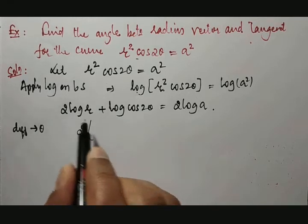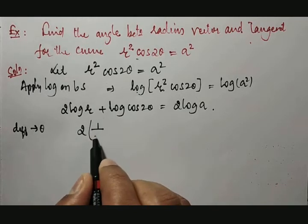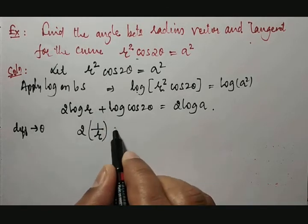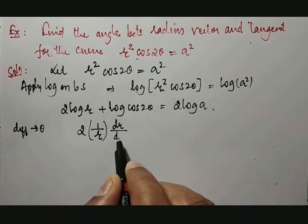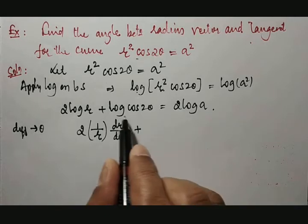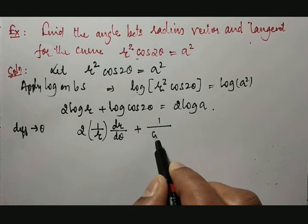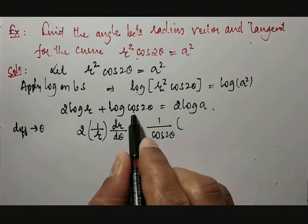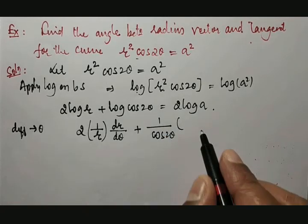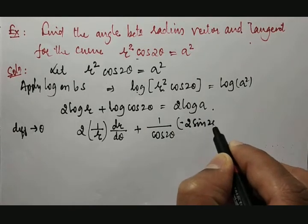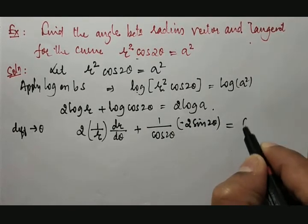2 times [1/r × dr/dθ] plus differentiation of log cos 2θ is 1/(cos 2θ) times (-2 sin 2θ) equals 0.